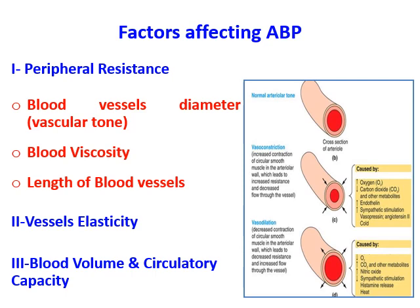The third factor affecting arterial blood pressure is blood volume and circulatory capacity. Increasing blood volume increases cardiac output and thus arterial blood pressure, as seen with excessive IV fluid. Conversely, decreased blood volume — due to hemorrhage or dehydration — decreases cardiac output and arterial blood pressure, leading to hypovolemic shock with severe hypotension.